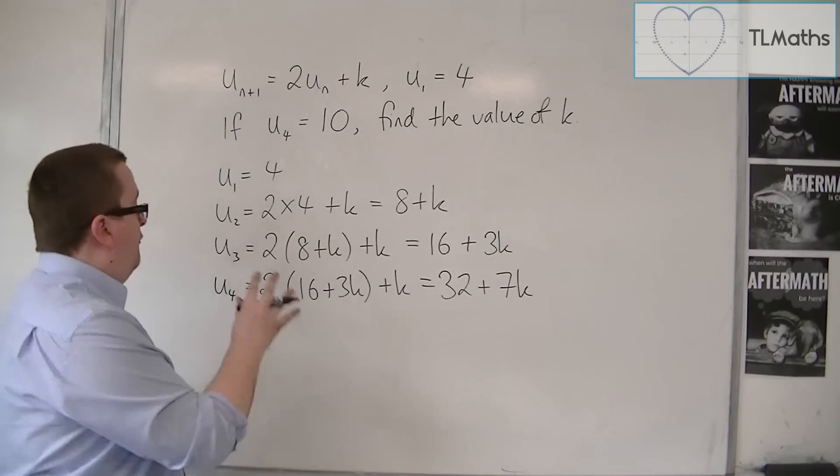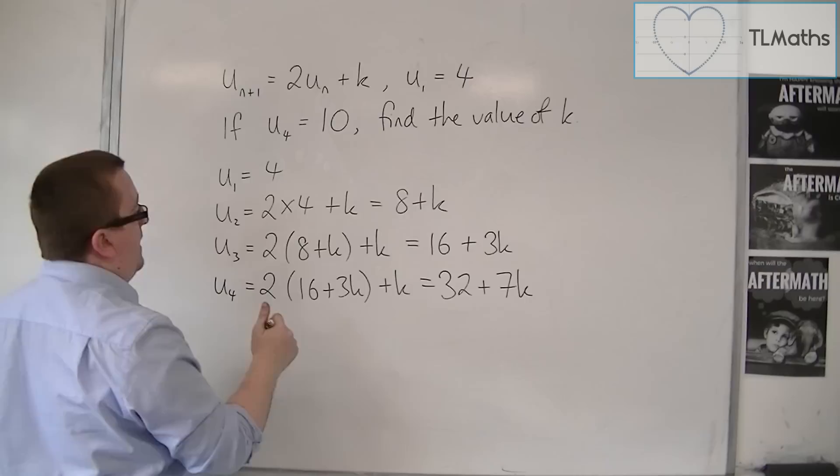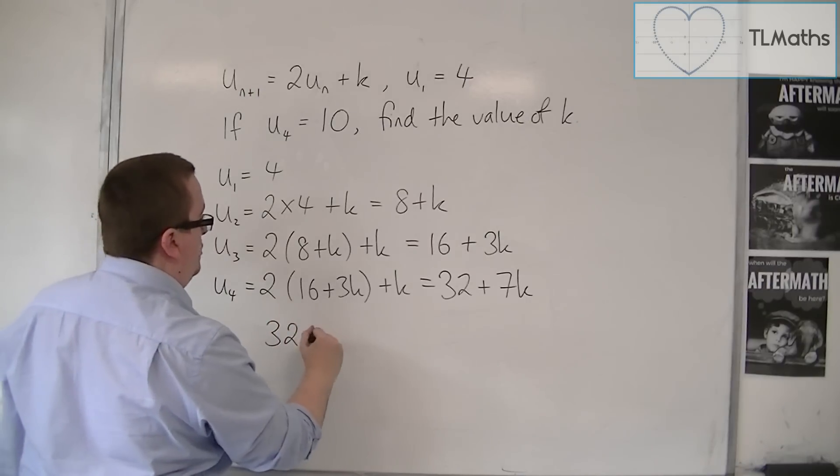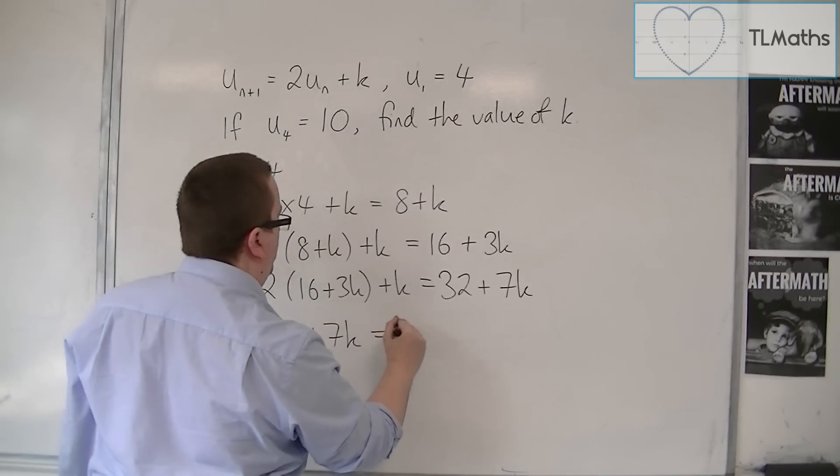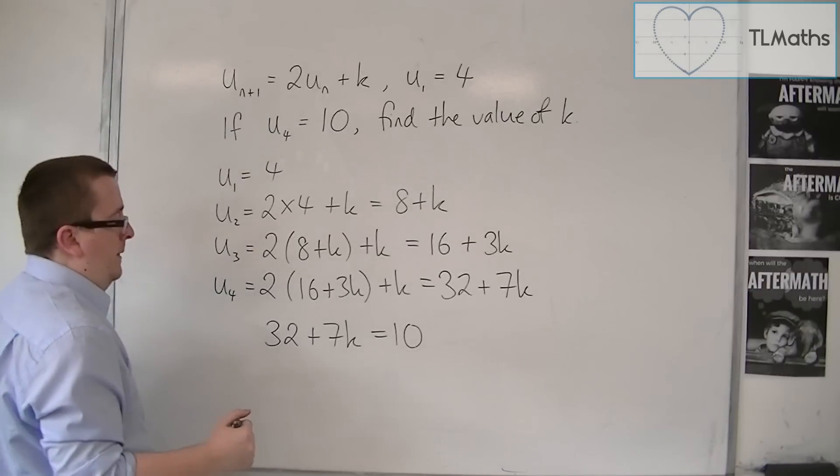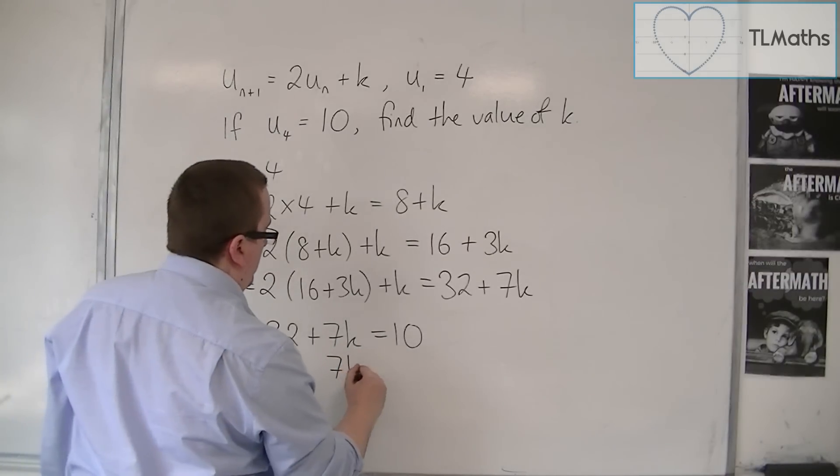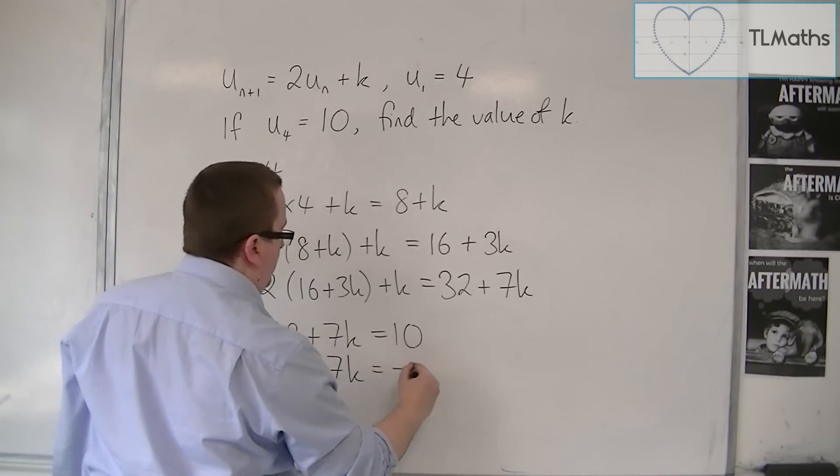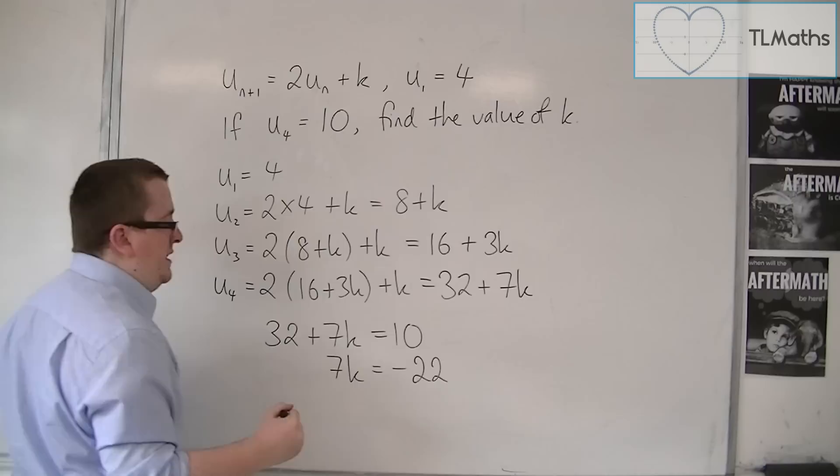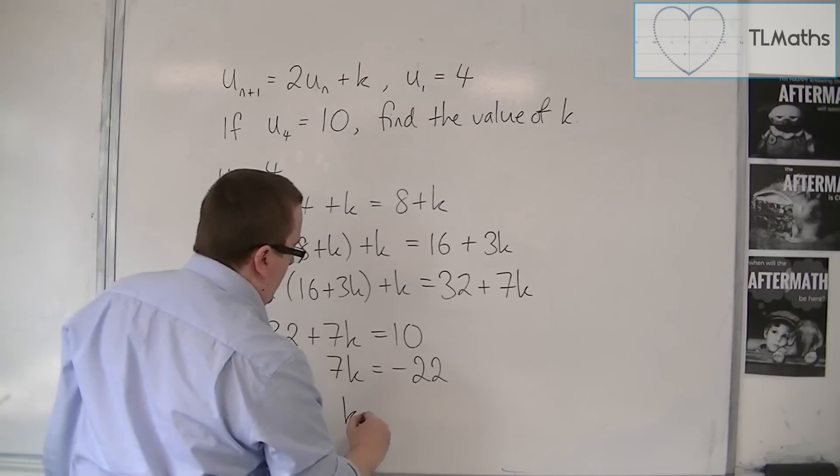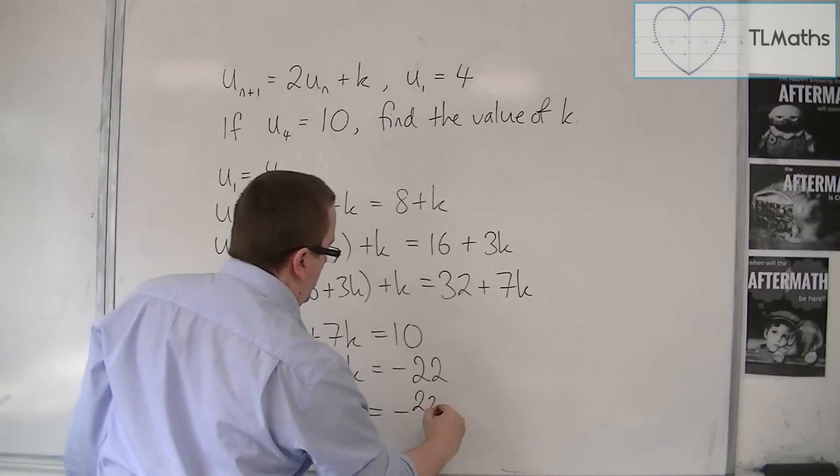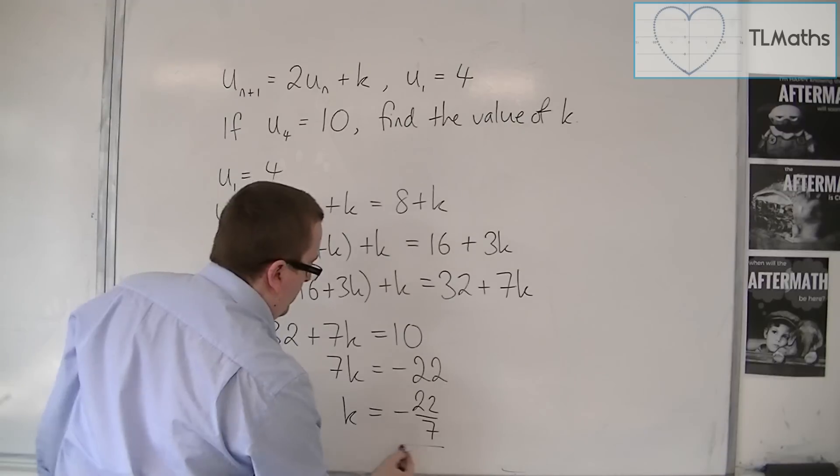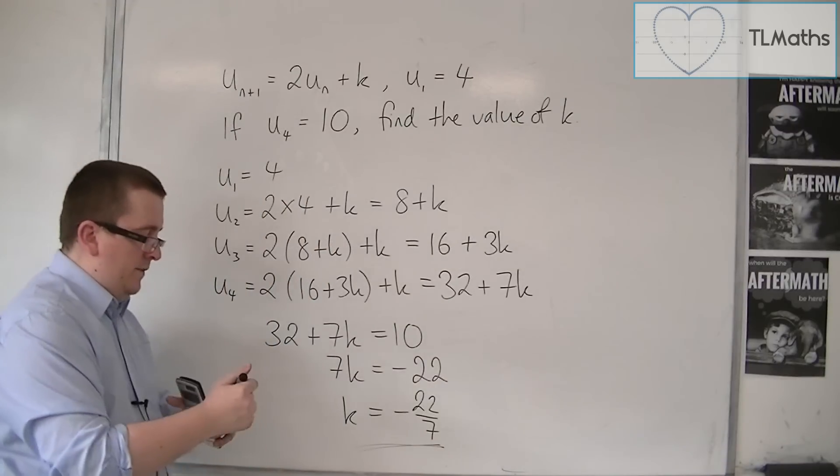Now I know that the fourth term is equal to 10, so I know that 32 plus 7k must be equal to 10. So I can take 32 from both sides, and we're going to get minus 22, so k has to be minus 22 over 7. That is the k that I'm looking for.